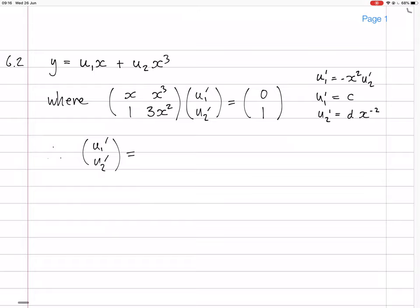Now one of them is going to be negative. So let's make u₁ dash negative because it's a smaller thing and we want a positive 1. So the difference, we want minus 1 plus 3 would be 2, we actually want half. So if we make u₁ dash minus a half and we make u₂ dash half x to the minus 2, I think that should do it.